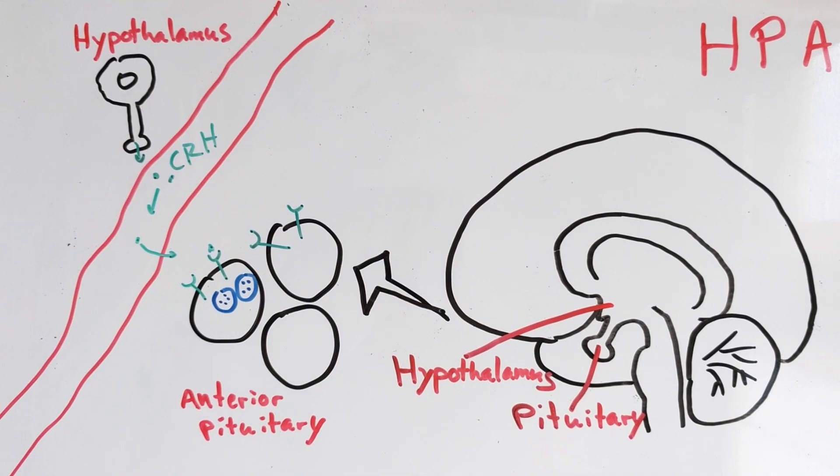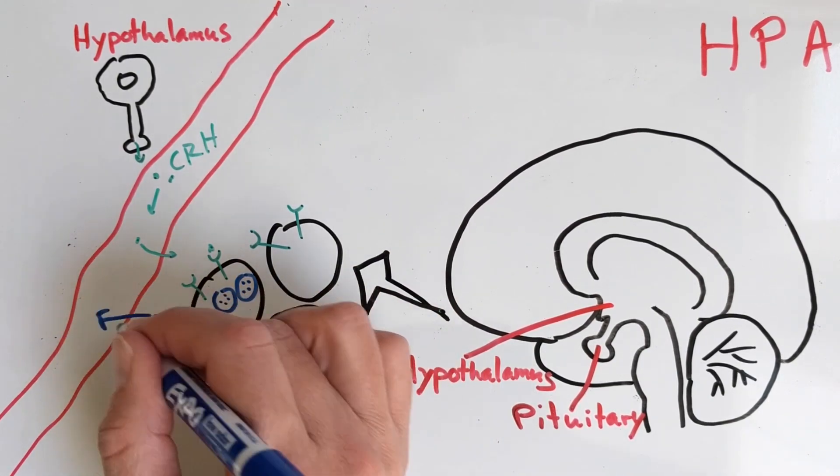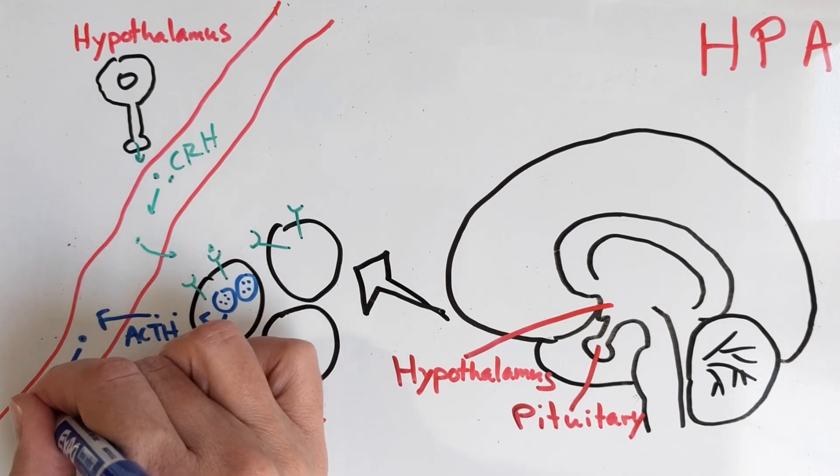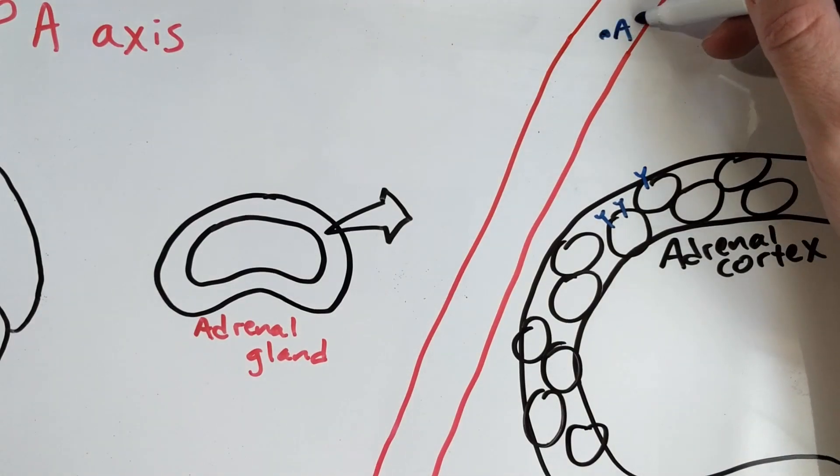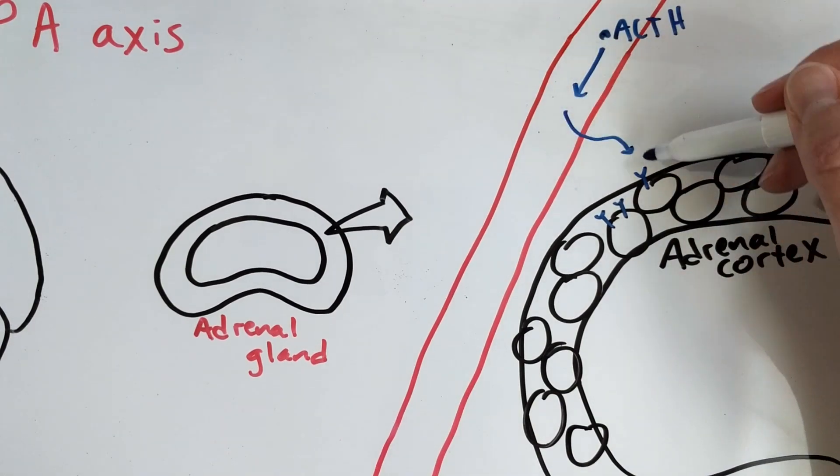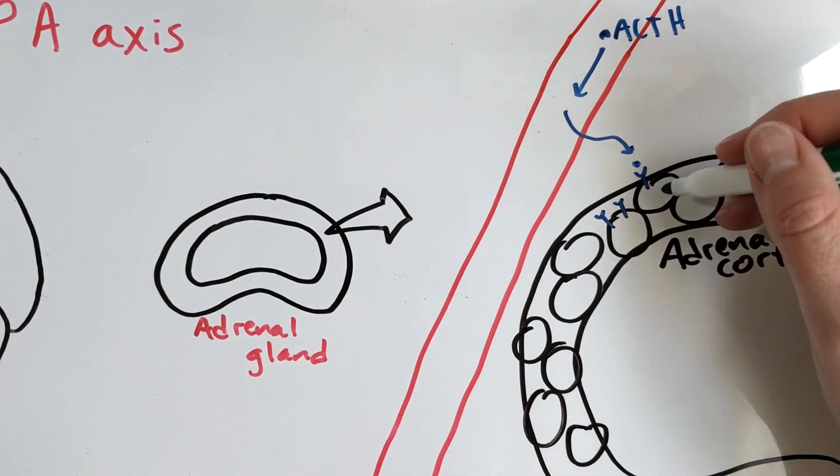CRH binds membrane receptors on endocrine cells in the anterior pituitary and triggers the release of a second hormone called ACTH. ACTH travels in the blood all the way to the adrenal cortex, the outer region of the adrenal gland.